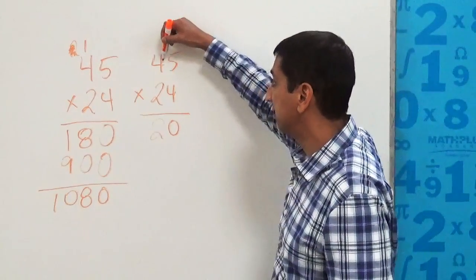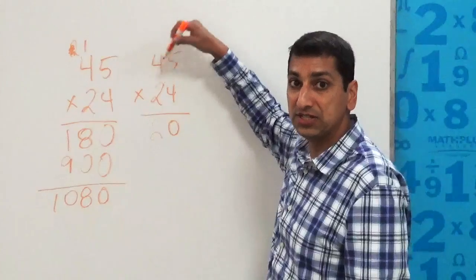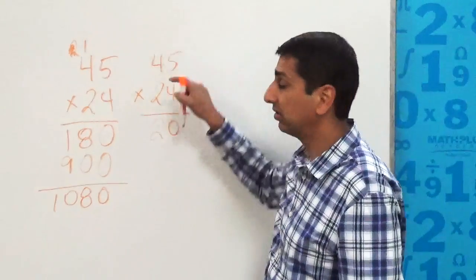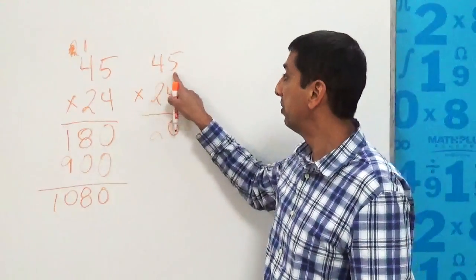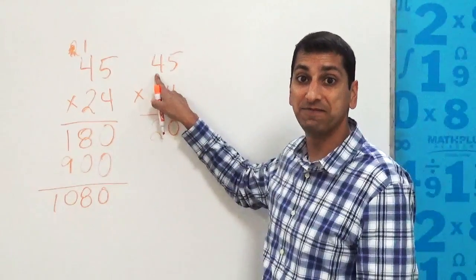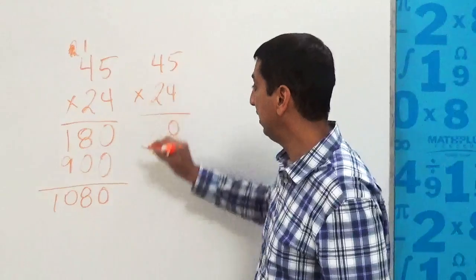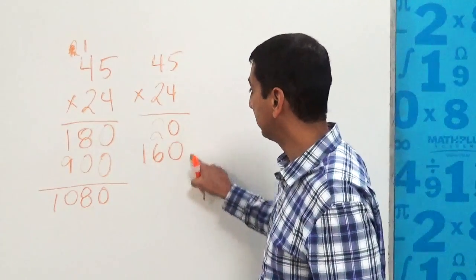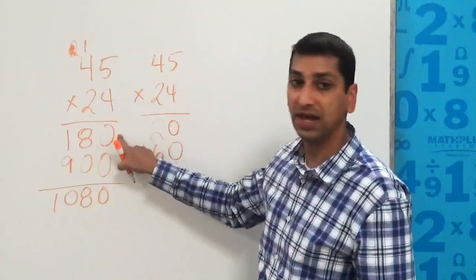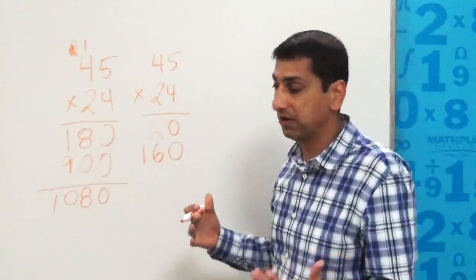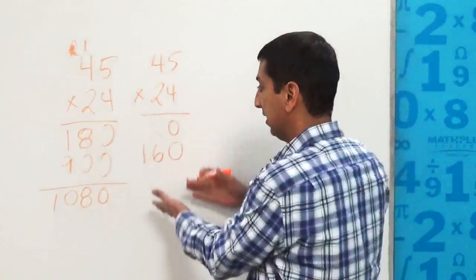The next is we're going to do four times this four, but we're teaching students that this is not a four. It is the digit four, but when it lives in this column, it actually represents 40. Four times 40 is 160, and you'll notice this is the 180 that was there, so there's nothing really different going on here, just in how I write it down.